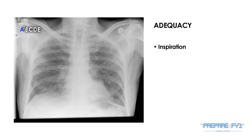I stands for inspiration. You should be able to see at least five anterior ribs in the lung fields. Note we have also illustrated the posterior aspect of the ribs on these films.